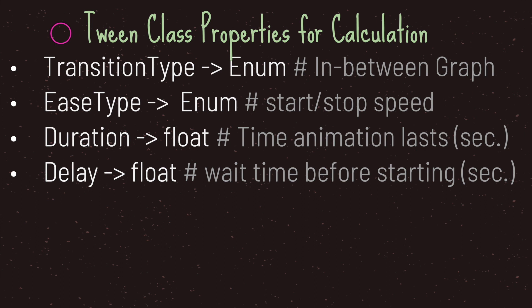The first customization is transition type, an enum that determines how your tween motion behaves in the middle of the animation. The second is the ease type enum, which customizes how the motion behaves on startup and towards the end. Third, methods ask for a duration — a float for how long the animation should last. Lower duration means faster motion. Lastly, a delay argument tells the tween how many seconds to wait before starting.